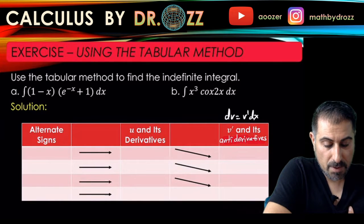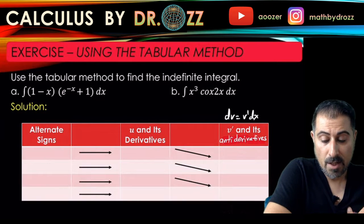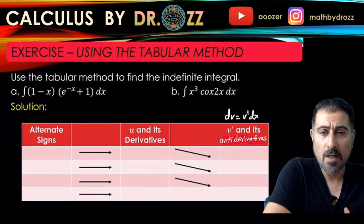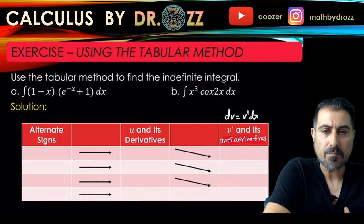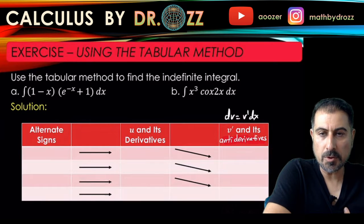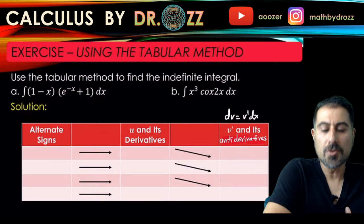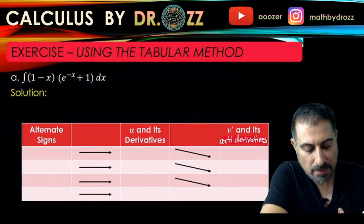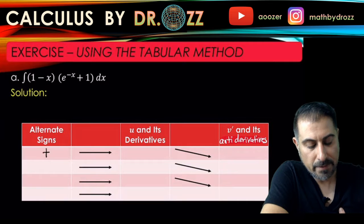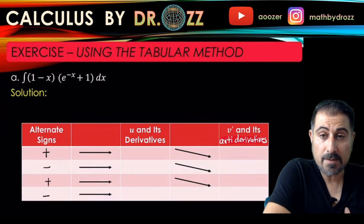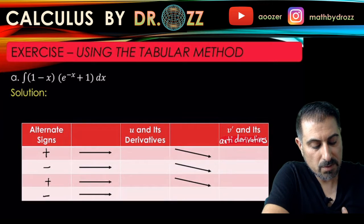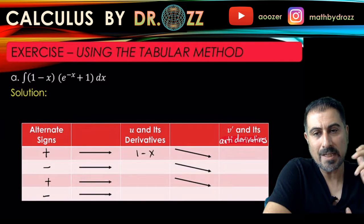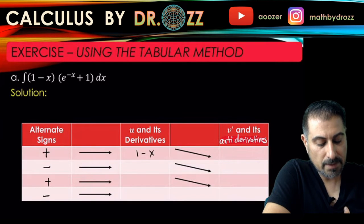In general, what we are doing in part a is we have a polynomial 1 minus x against an exponential term e to the minus x plus 1. In LIATE, I remember that algebraic expressions are called u if they are against exponential, so I'm going to call u to be 1 minus x. We have the alternating signs here, so we're going to start with positive and continue with negative, positive, and negative. We have to stop when the derivative of u becomes 0. Here one derivative is negative 1 and the second derivative is 0, so we're going to stop here.